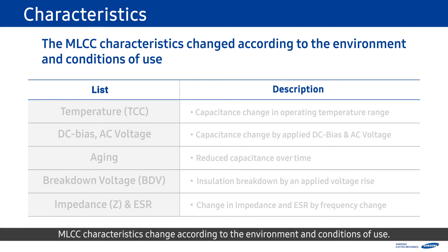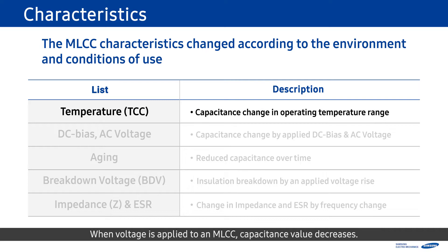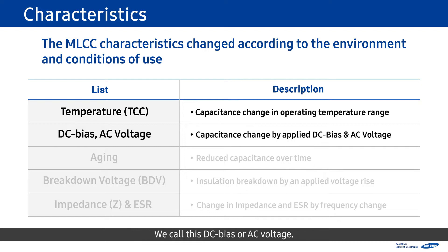MLCC characteristics change according to the environment and conditions of use. For example, capacitance value changes at different operating temperatures — we call this TCC. There are suitable MLCCs for each temperature environment. When voltage is applied to an MLCC, capacitance value decreases; we call this DC bias or AC voltage.